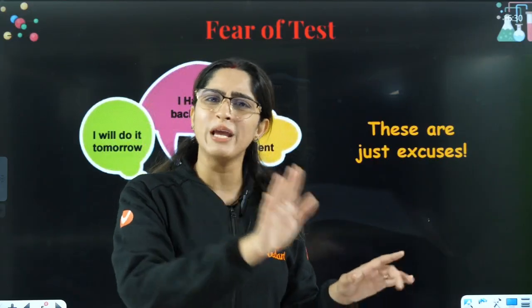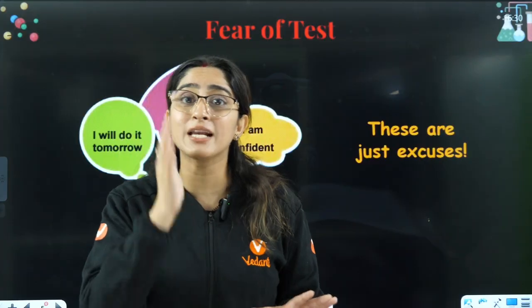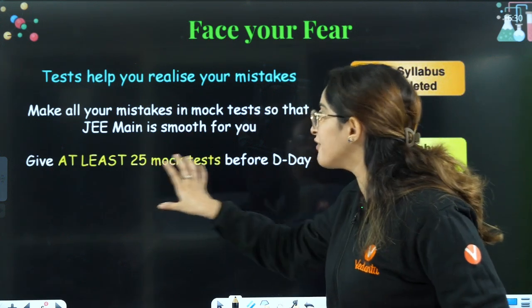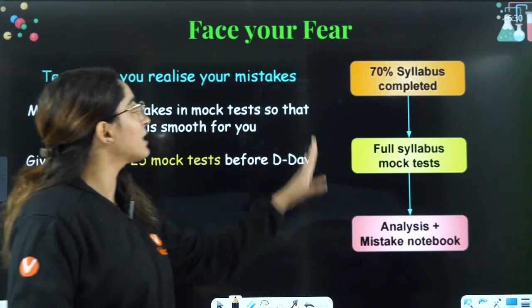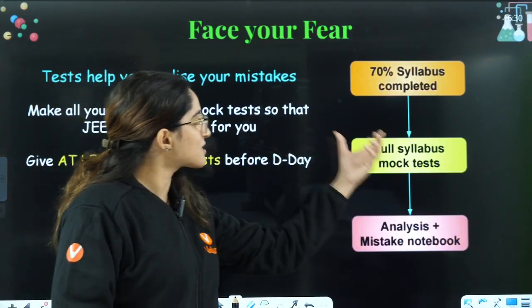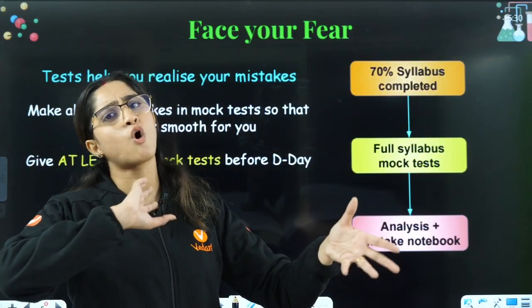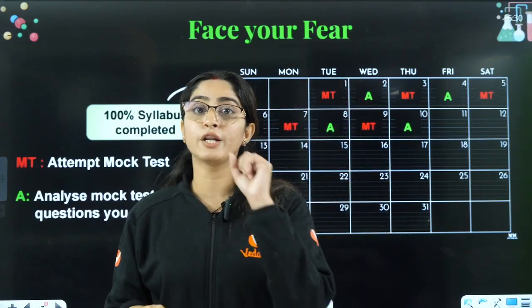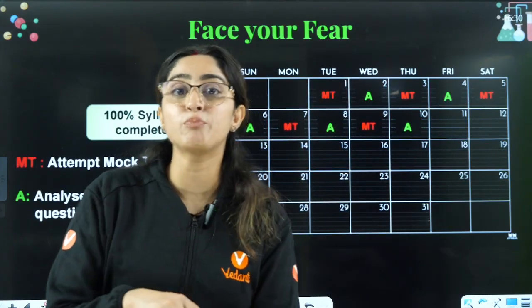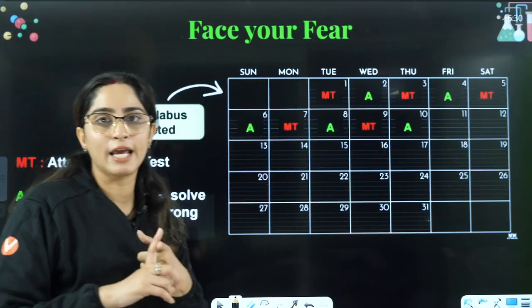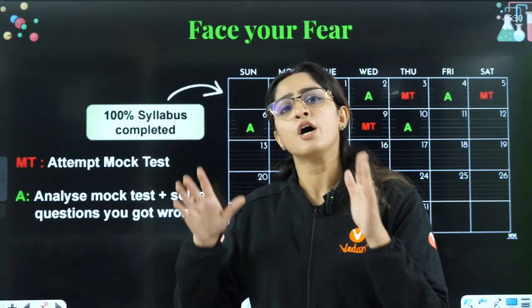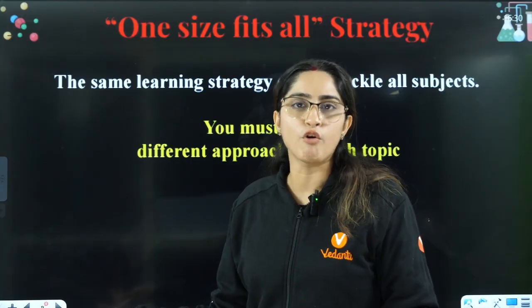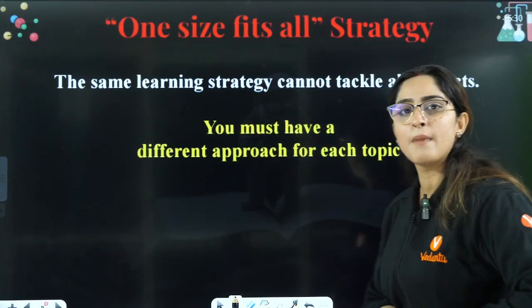You can make mistakes in the test, but you can't afford to make mistakes in the exam. That's why we want you to make mistakes in tests — they reveal your weak points and you have time to correct them. You need to solve at least 25 mock tests before your JEE mains. Once 70% of the syllabus is completed, start full-syllabus tests. Before that, solve part-syllabus tests and maintain a mistakes notebook. Every time you give a mock test, analyze it — without analysis, there's no use of a mock test.